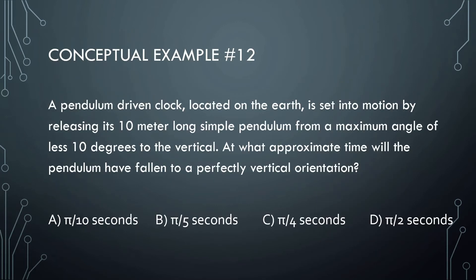Okay, let's look at the next one. A pendulum-driven clock located on the earth is set into motion by releasing its 10 meter long simple pendulum for a maximum angle of less than 10 degrees to the vertical. At what approximate time will the pendulum have fallen to a perfectly vertical orientation? Okay, so what's happening here is we have a pendulum like this. It's at some angle, okay, some small angle, and then it's going to go back and forth like this. And we want to know how long it's going to take for the pendulum to go from here to here.